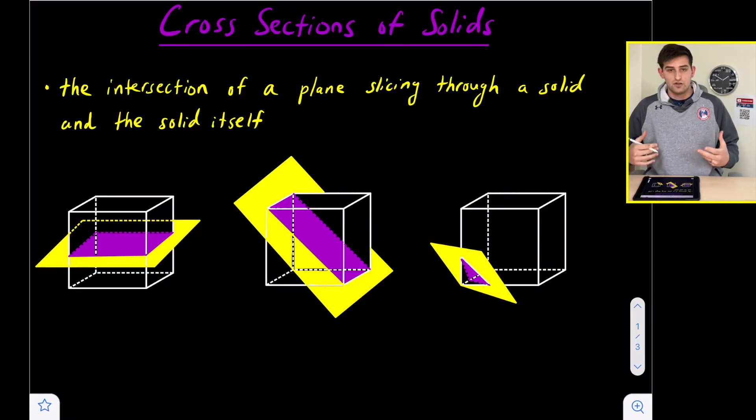In this video, I have drawn various types of solids in white, and the plane that is slicing through our solid is in yellow. The cross section that is formed is going to be in purple.